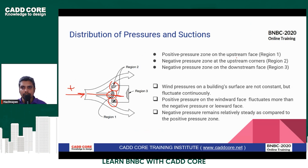So positive pressure zone on the upstream phase, region 1, it comes from upstream. It comes from region 2. And we have done region 2. I have 2 numbers — negative pressure zone on the downstream phase; we have to say leeward.